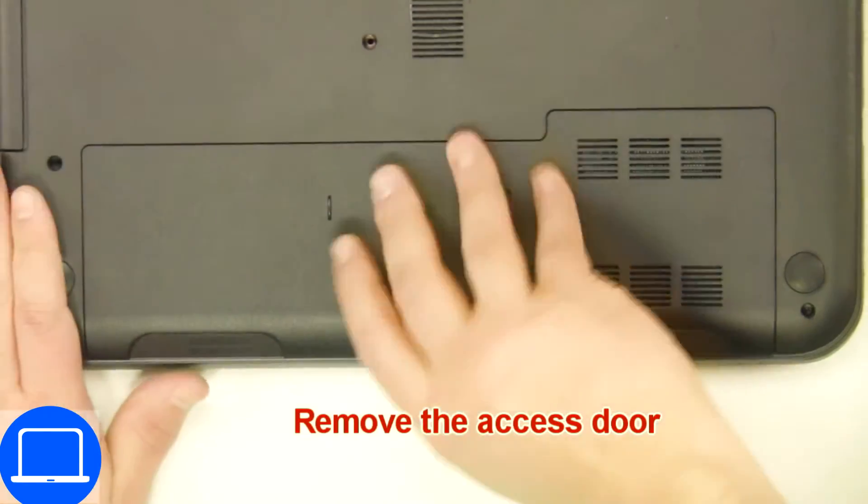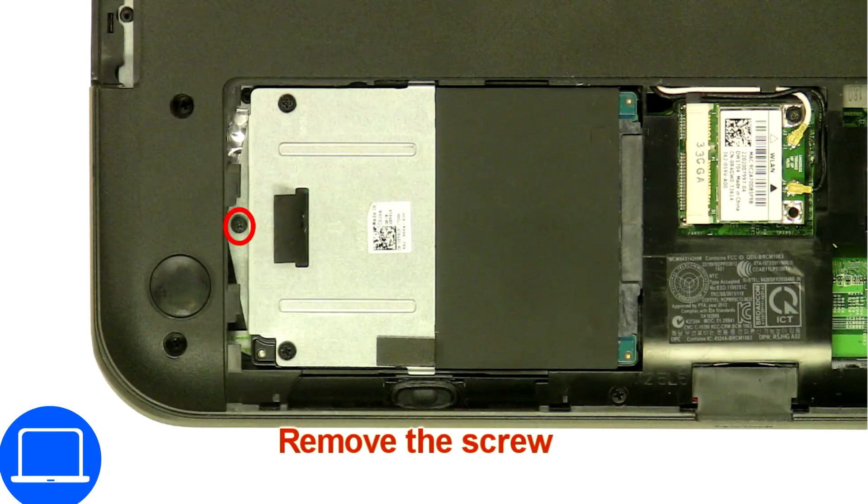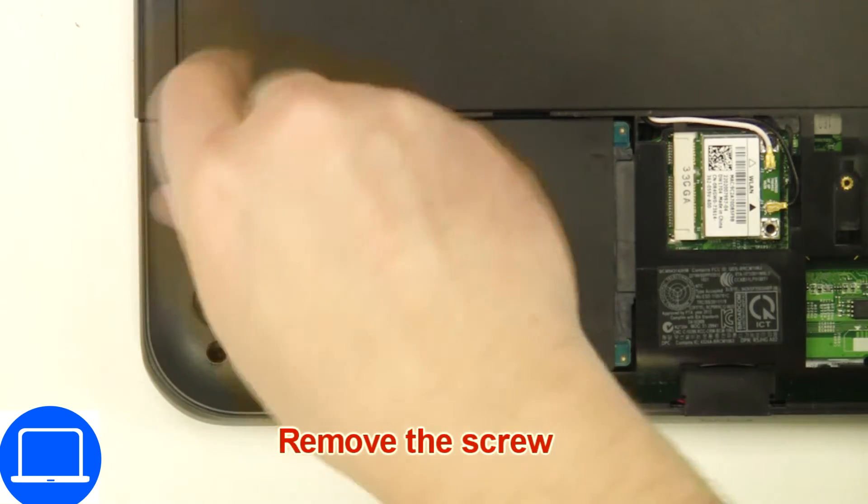Unscrew then remove access door. Now unscrew and remove caddy.